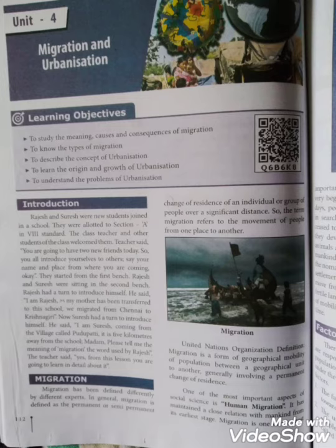First, we will talk about migration. Movement of people from one place to another is known as migration. The United Nations defines it as a form of geographical mobility of population between geographical units, generally involving a permanent change of residence. One of the most important aspects of social science is human migration.